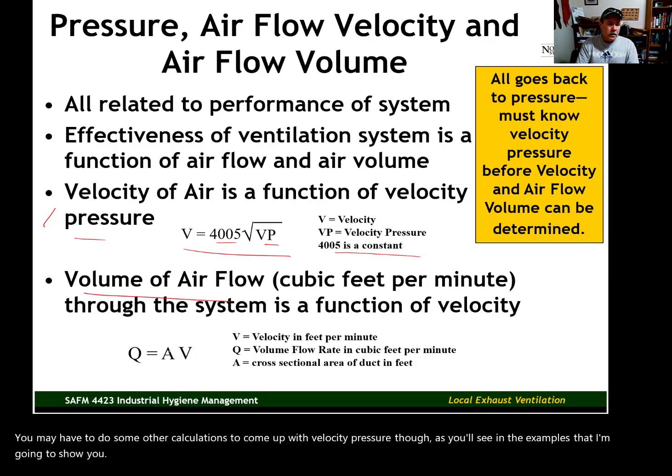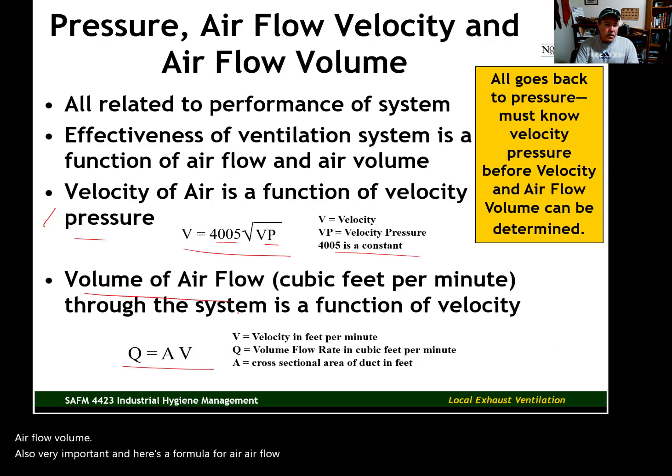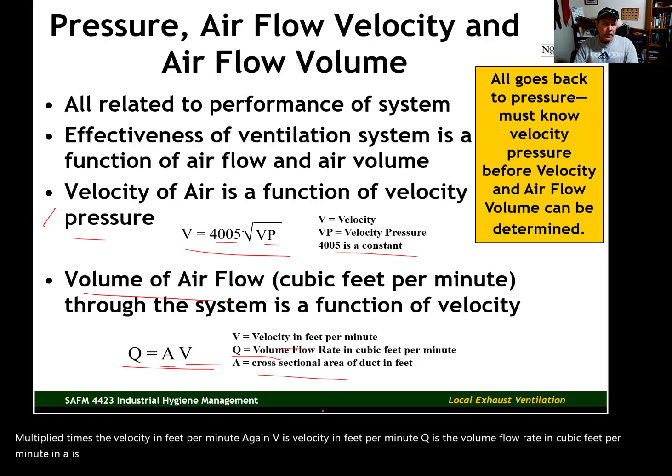Airflow volume, also very important. And here's the formula for airflow volume. Q equals area of the ductwork multiplied times the velocity in feet per minute. V is velocity in feet per minute. Q is the volume flow rate in cubic feet per minute. And A is the cross-sectional area of the duct.